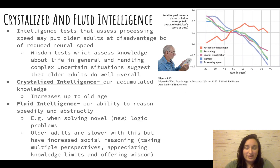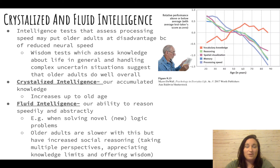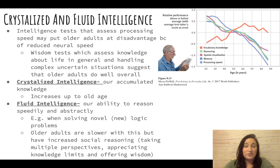Two types of intelligence that IQ tests assess: first, crystallized intelligence — think of it as hardened, like hard facts. This is our accumulated knowledge, and it tends to increase up until old age. For example, vocabulary knowledge goes up as we age. But other things like spatial visualization and processing speed show a decline.